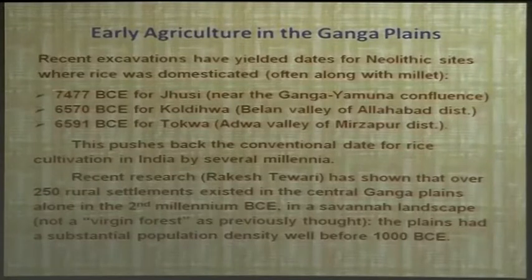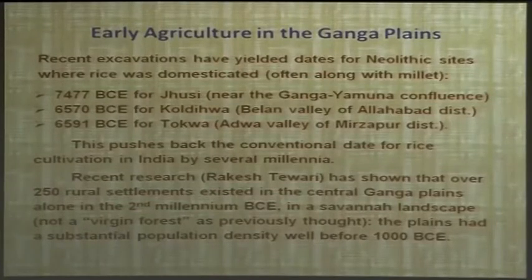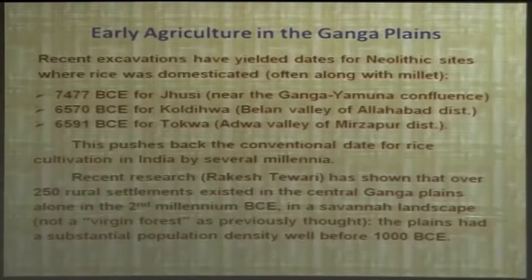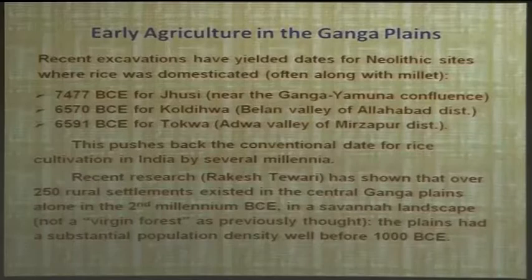Some of these settlements actually date to Neolithic times, when humans first created permanent settlements and started practicing agriculture. This completely changes our understanding of the Gangetic Plains. Palaeoenvironmental studies show it was not a virgin forest but more of a savannah landscape — large clearings already existed. There were larger pockets of forest than today, no doubt, but also large openings with grasslands where rural settlements practiced agriculture. The 250 known sites is a provisional figure; there may have been many more.